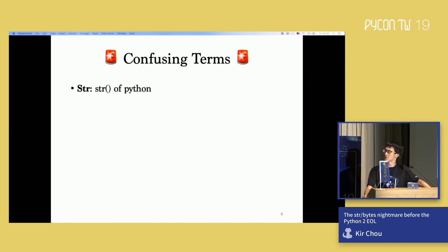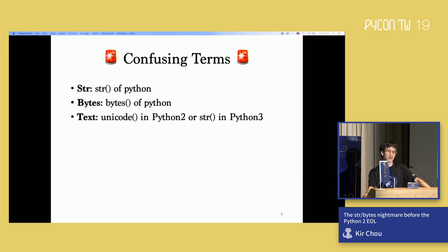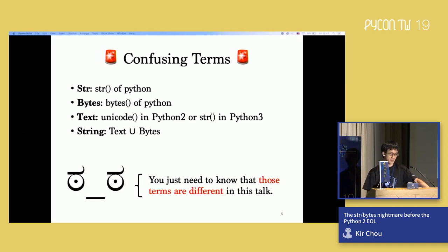First, the thing is called str. Str means str function in Python. Bytes means bytes function in Python. Text means Unicode in Python 2 and str in Python 3. String means a general string, just text or bytes. It can be any type. Don't worry, you don't need to really understand the difference now. You just need to know there's a difference between those terms.